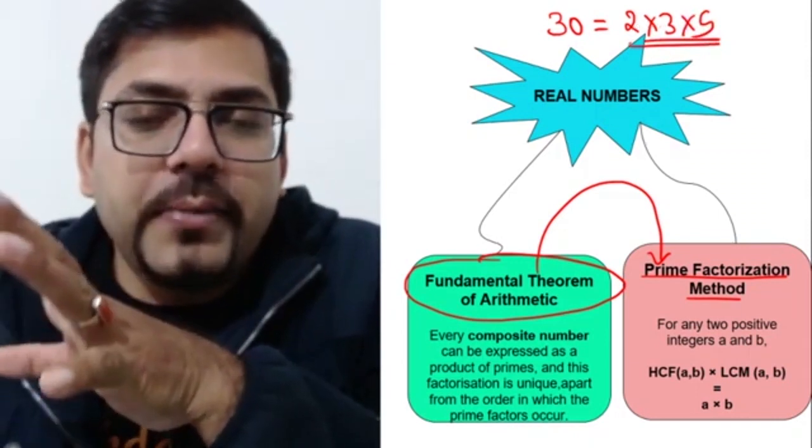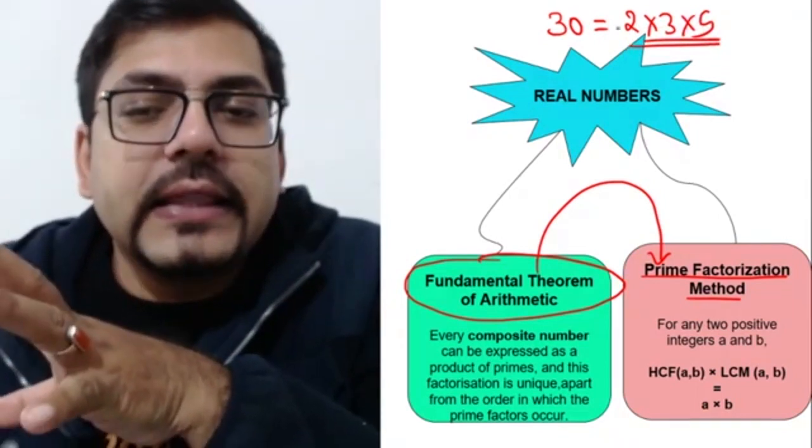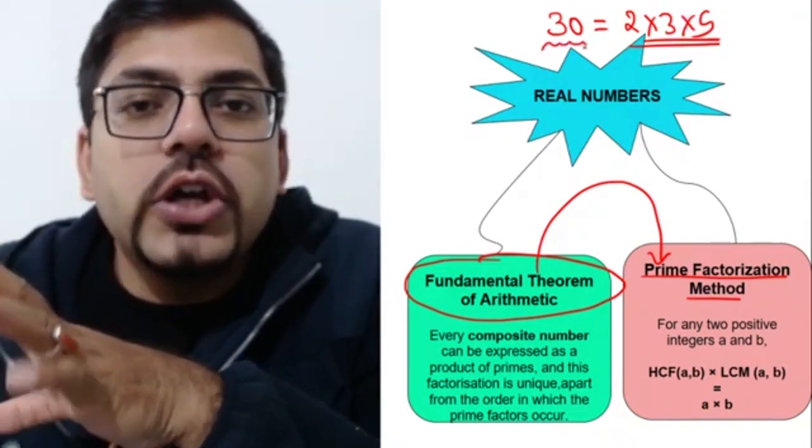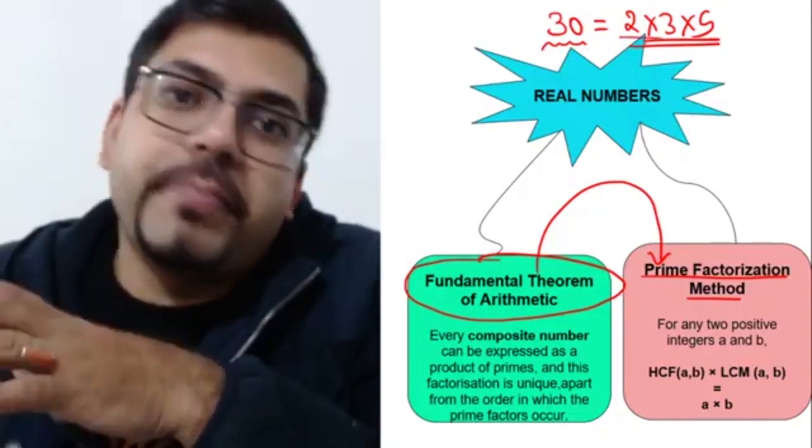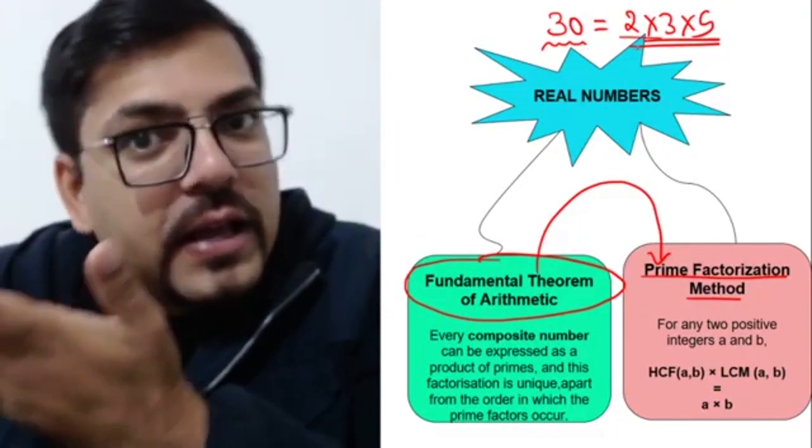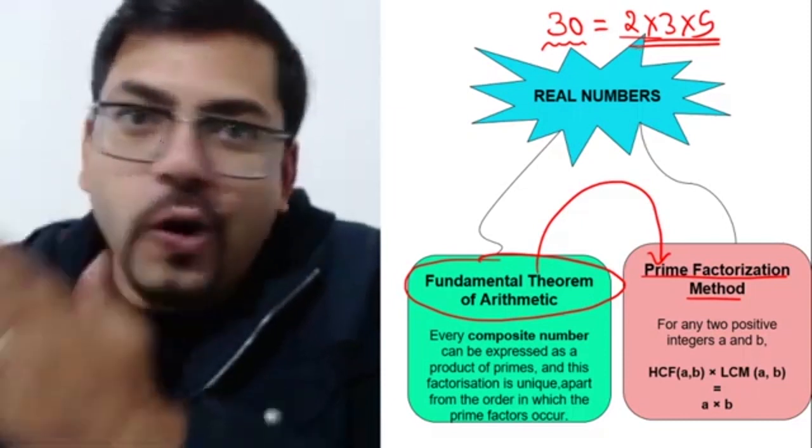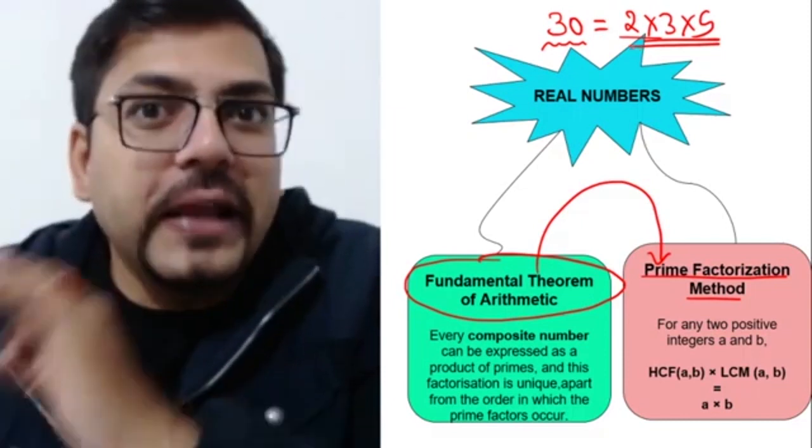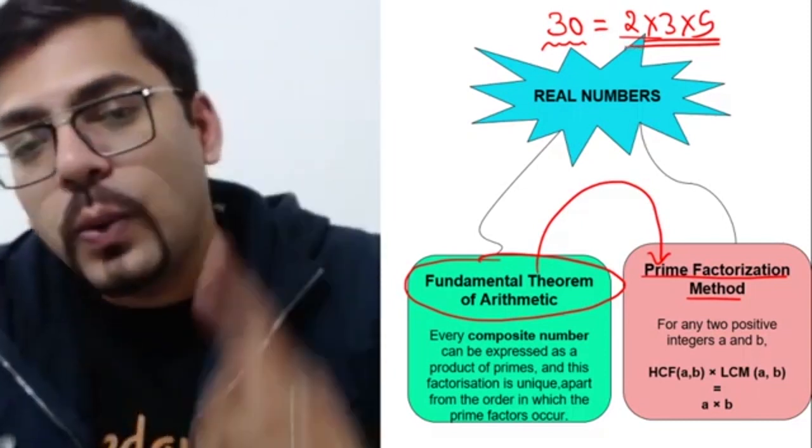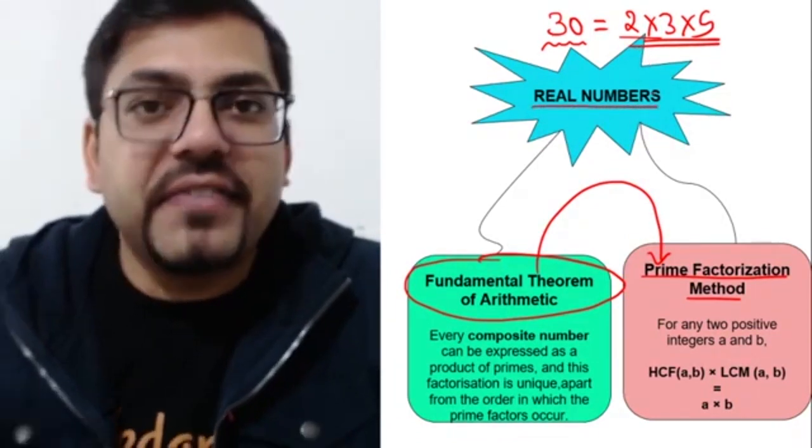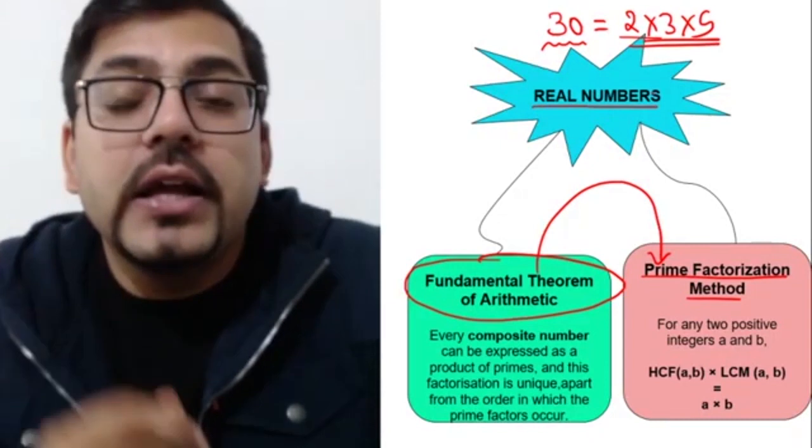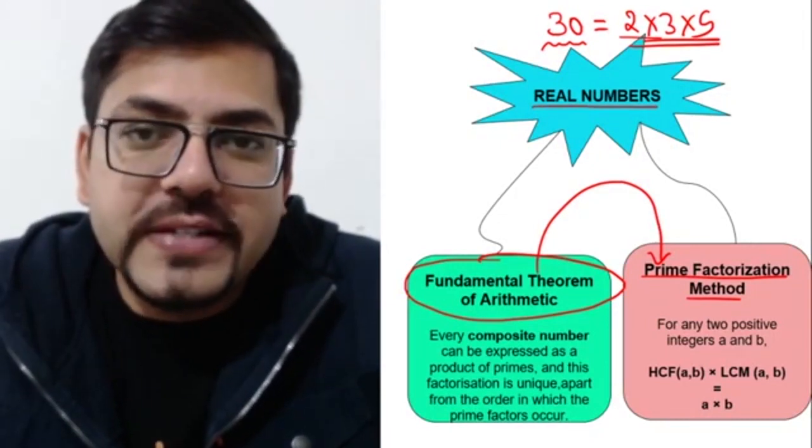So basically, fundamental theorem of arithmetic says that whatever number you have, you can represent that number as product of primes. That is fundamental theorem of arithmetic. Plain and simple. Now why I am saying that this is important? Because in this chapter real numbers, after the exclusion - so this year Euclid has been excluded from this chapter.